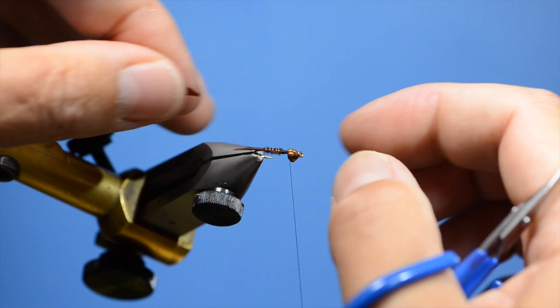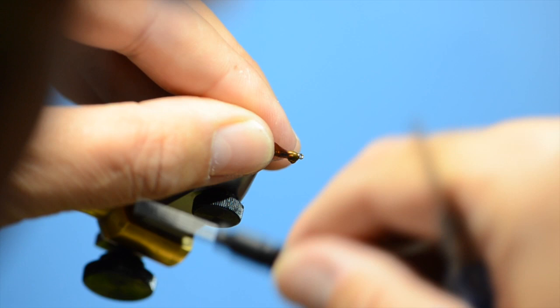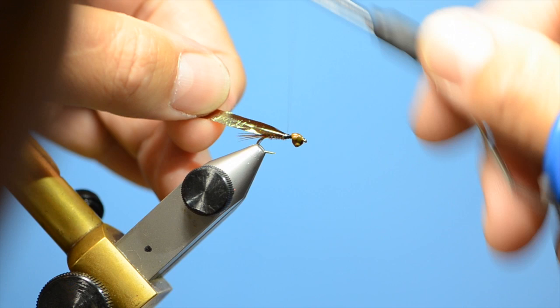Now we are going to tie in some flashback in brown. It should be about the width of the gap of the hook. Let me see if I can get this in here once. There we go. Just going to lay that in there and get it on top.